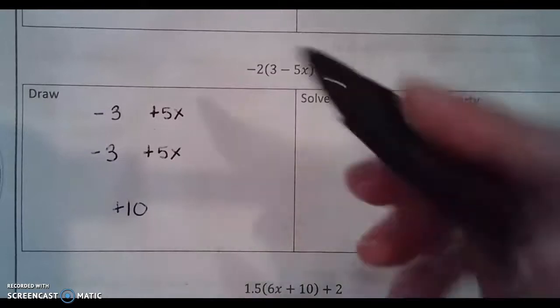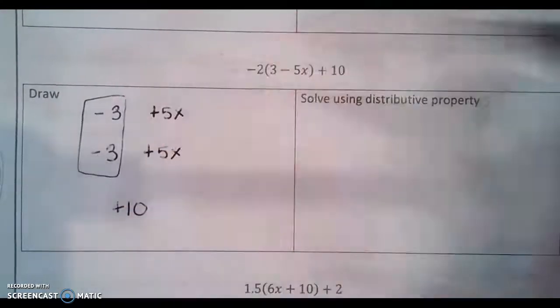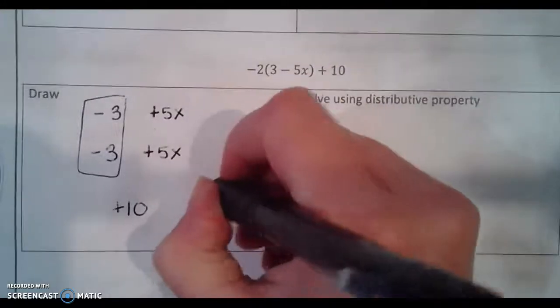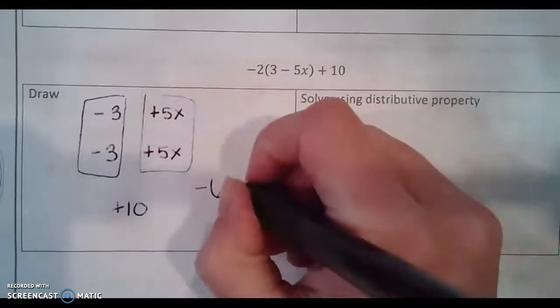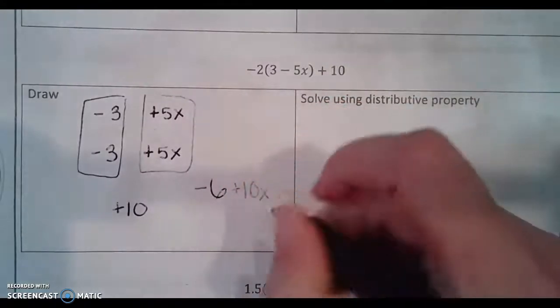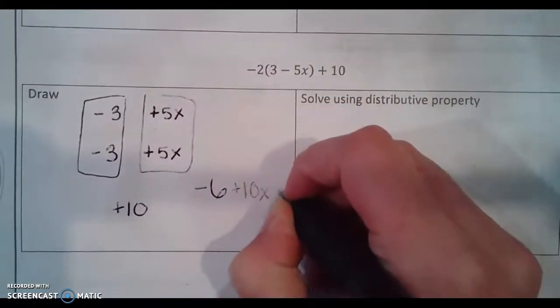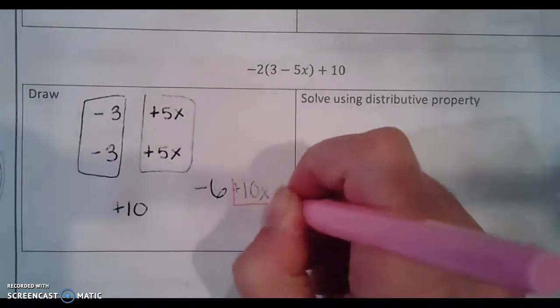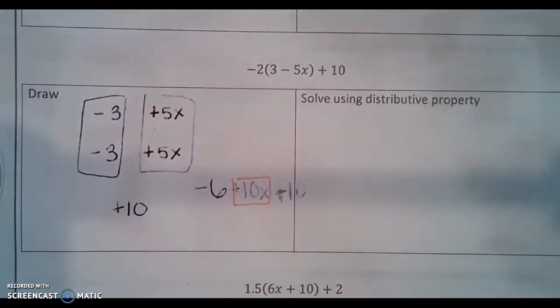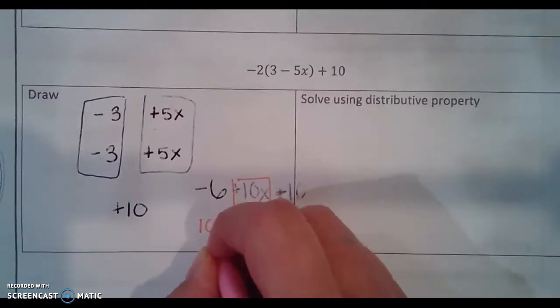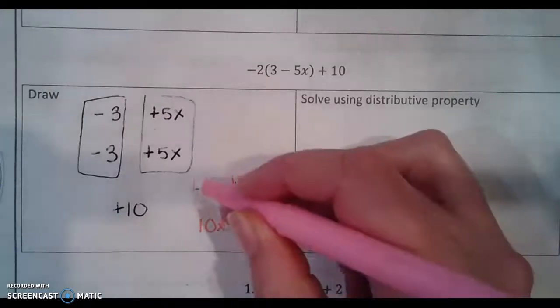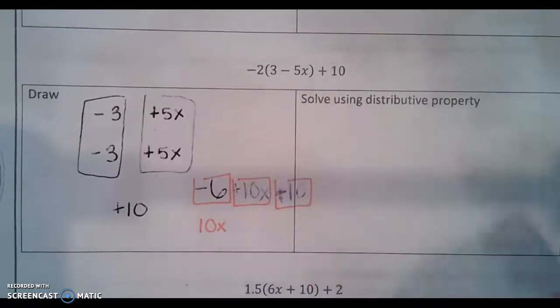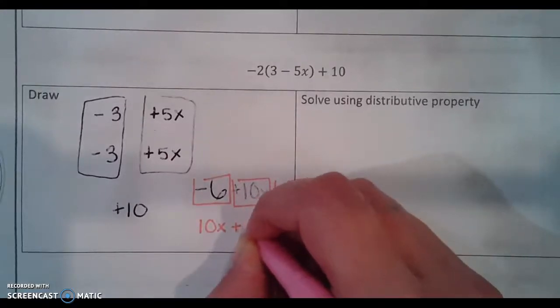And if we put this all together you'll see we have negative 6 positive 10x plus 10. Plus 10. Now I cannot combine anything with my positive 10x. So I'm going to just keep that by itself. Positive 10x. But I can combine negative 6 negative 6 and positive 10 and that would make positive 4.